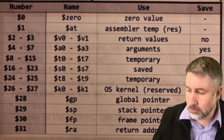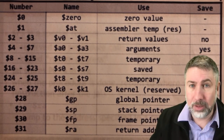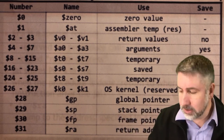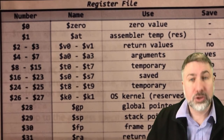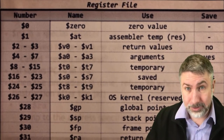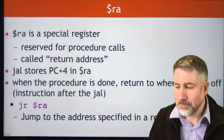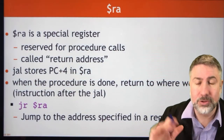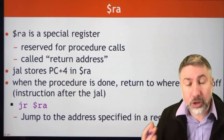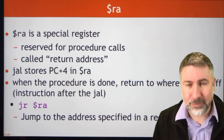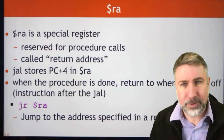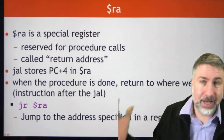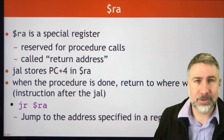This is a special register whose job it is to store the program counter when you're calling a subroutine so that you can return back to where you started. It's reserved for procedure calls. It's not a good idea to use it for anything other than procedure calls, because otherwise you might mess up your return address and never get back where you started.